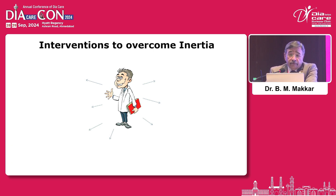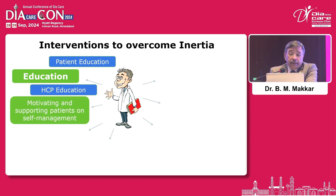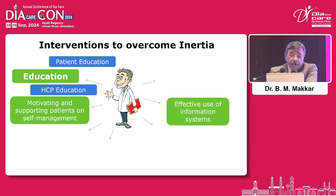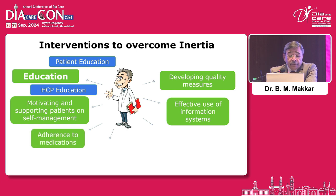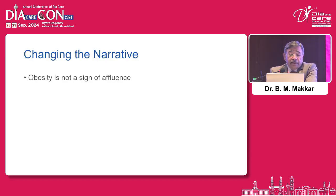What are the interventions to overcome inertia? Most important is education — both at the level of patients and healthcare providers. There are also multiple other measures: motivating and supporting patients on self-management, effective use of internet information systems, developing quality measures, adherence to medication, adherence to guidelines, and personal feedback to healthcare professionals. Changing the narrative is also very important.